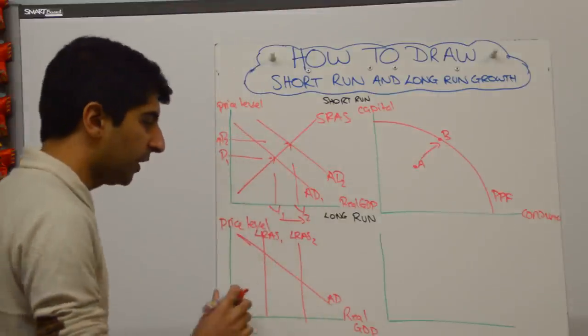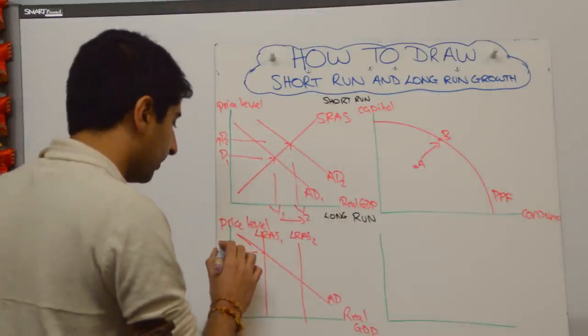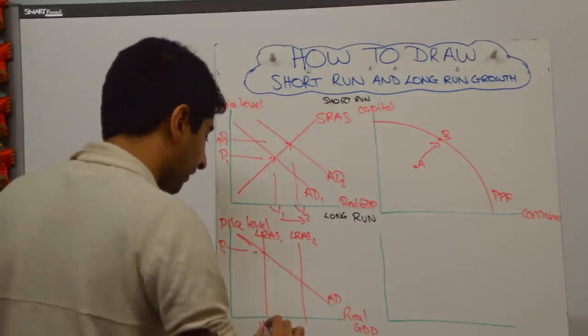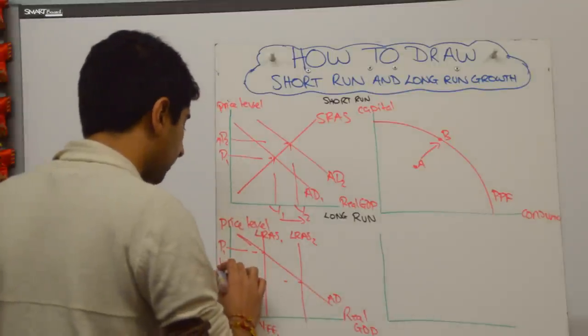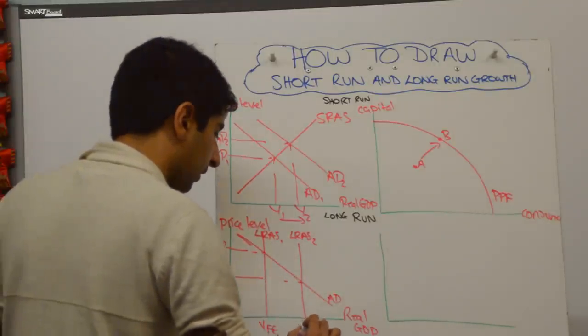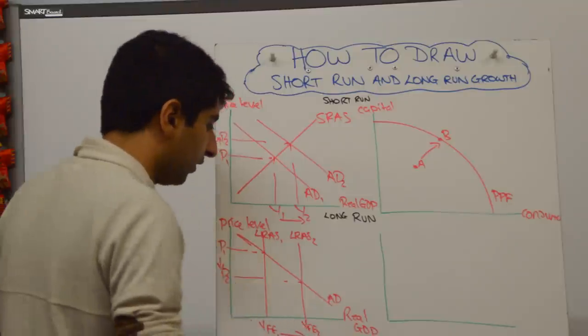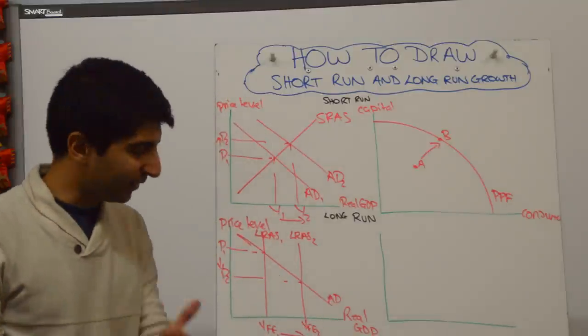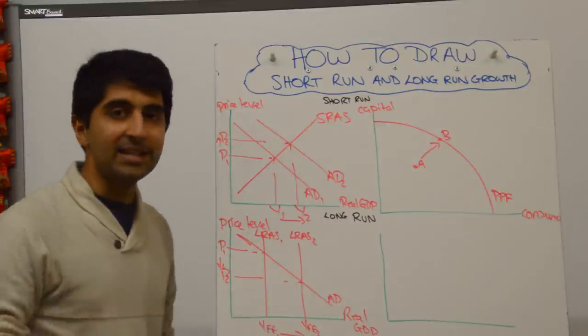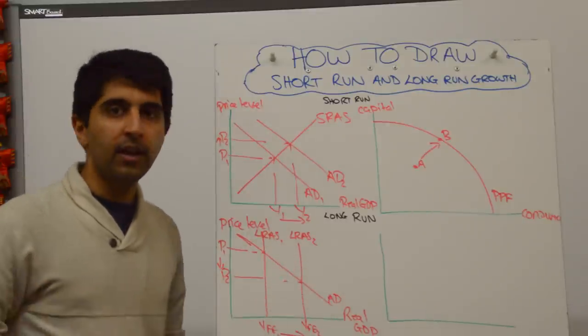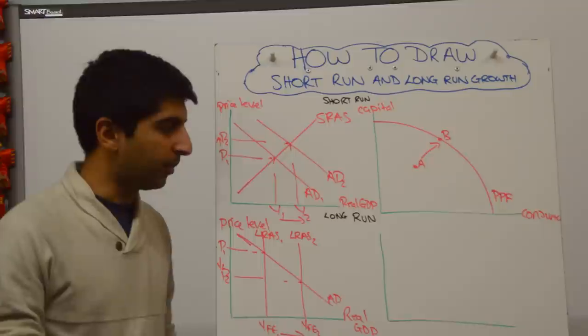With a really simple aggregate demand curve. And all I want to show you here is the initial equilibrium, which is P1 and YFE1, to another price level of P2 and YFE2. That is all I need to show there. And that's the job done. That's the increase in potential growth using the ADAS model in a classical interpretation of the model.